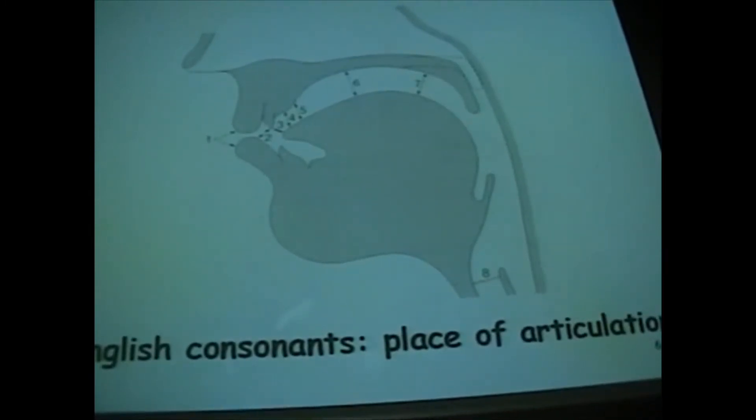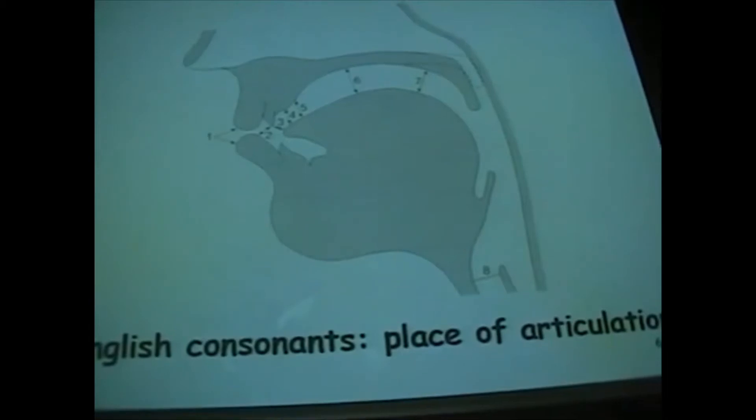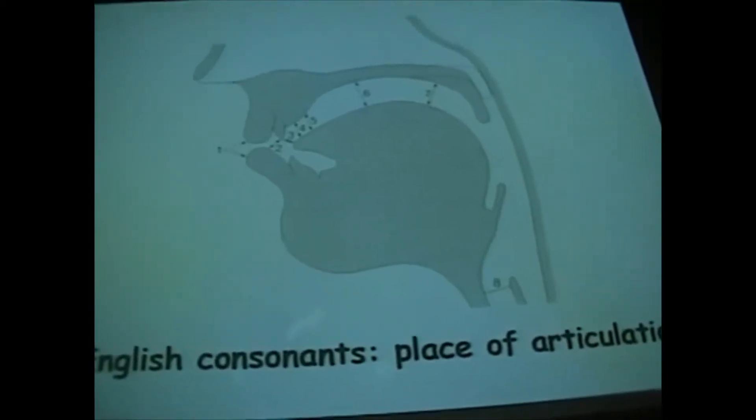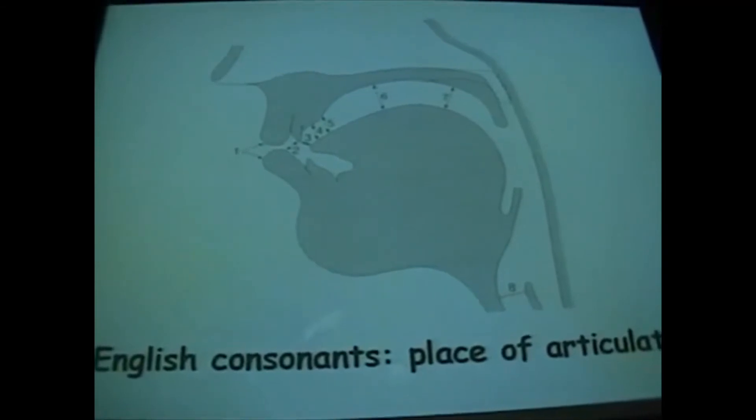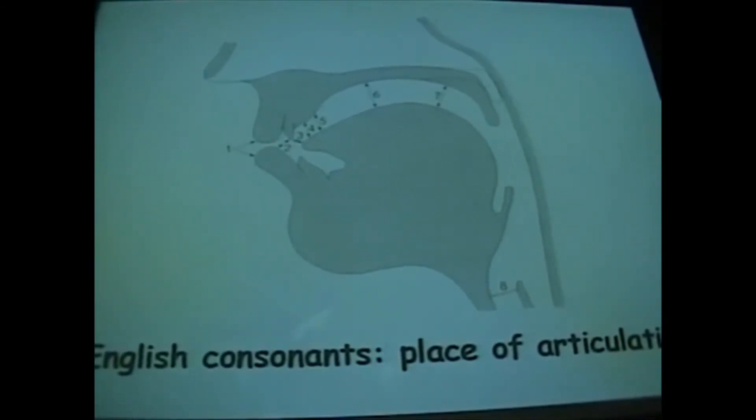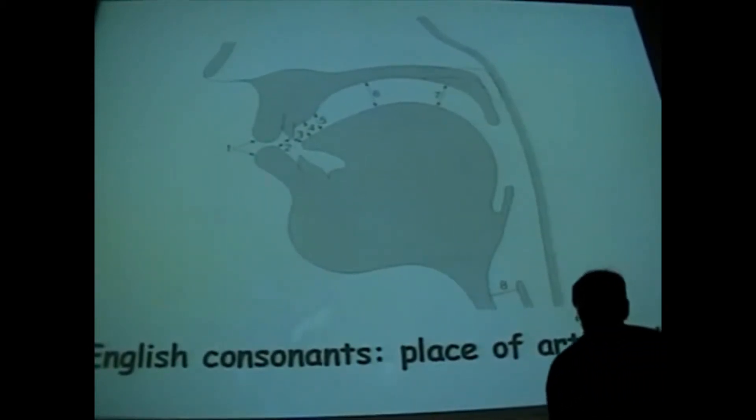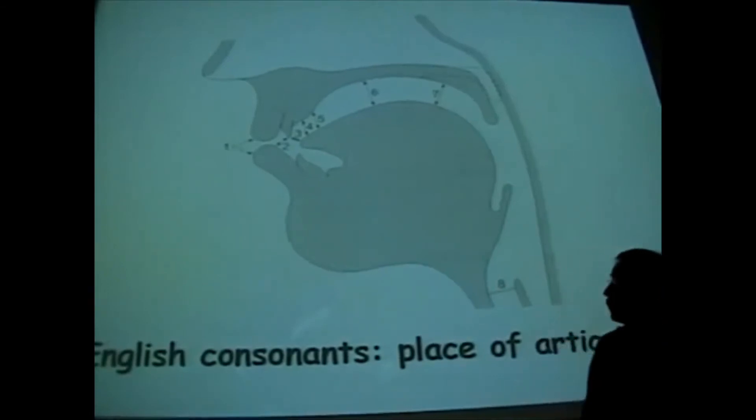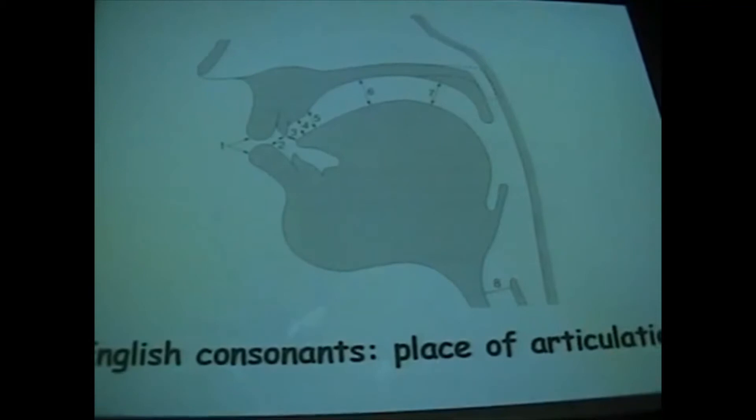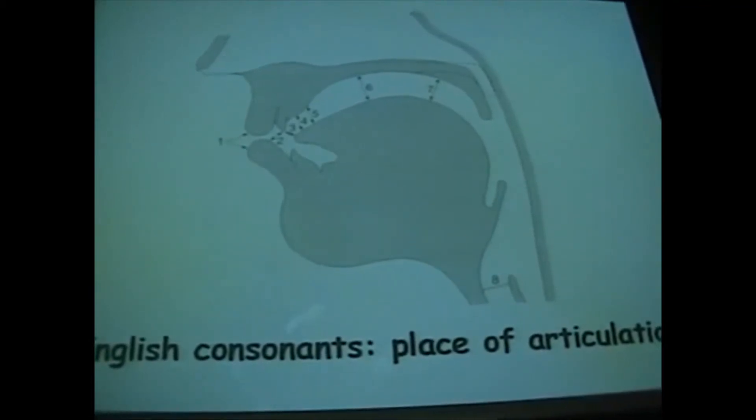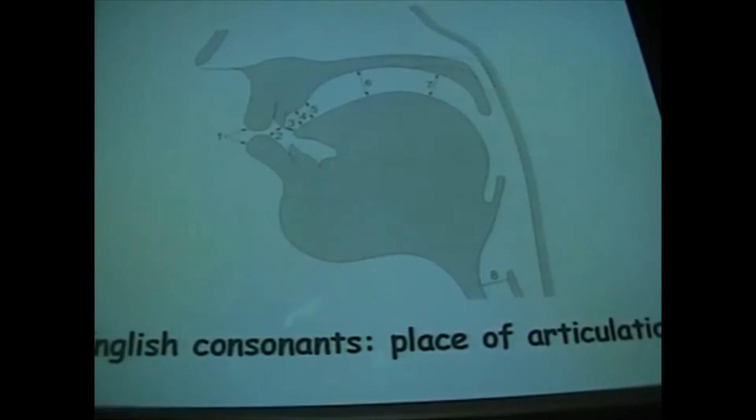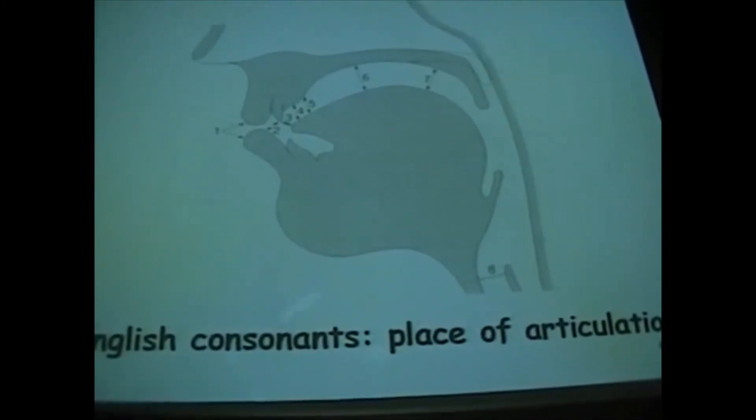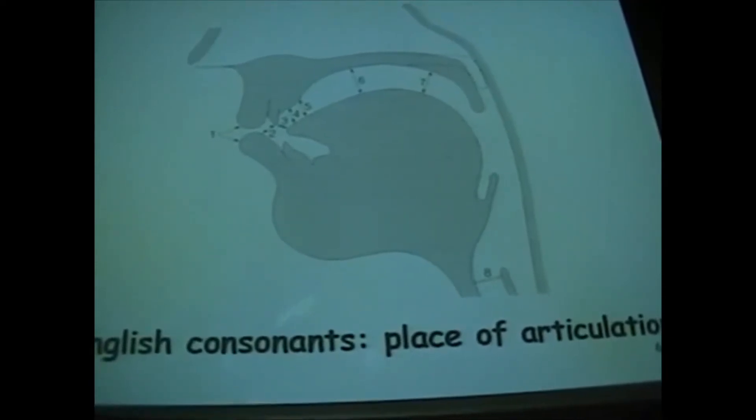Now we have to look at where in the vocal tract the articulation takes place. There you see something which you will see increasingly today and elsewhere. You have a human head cut in half. So you can see what will happen to you if you misbehave on the course. So there are places of articulation. And you can see that we can move all the way back from the lips, going all the way back to number eight here, which is the glottis. Now you have this information on your handout, and I'm going to go through place of articulation now.